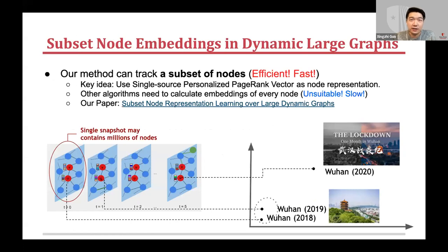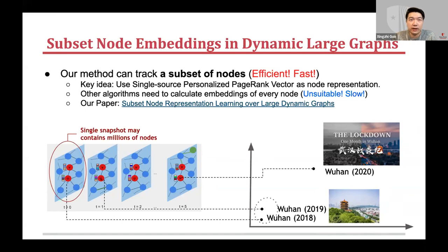This question motivates us to design a new algorithm that handles what we call subset node embedding in dynamic large graphs. Using this algorithm, we can track the embeddings of several predefined nodes — a subset of nodes we are interested in — as the graph keeps evolving. The key idea is to use personalized page rank, a very successful algorithm used by Google search. One advantage over other methods is that we compute only what we need for the subset nodes, while most other algorithms compute all embeddings of every node across every time, wasting the rest. Our algorithm is more efficient and faster. For more details, please refer to our paper.